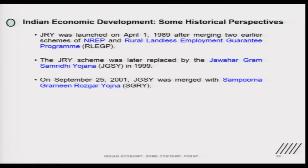JRY was later merged into the Jawahar Gram Samridhi Yojana (JGSRY). Under this scheme, emphasis was given on capital asset creation — if a village lacked capital assets such as water ponds, good roads, or a playground, the money could be used for those purposes. On September 25, 2001, JGSRY was merged into Sampoorna Grameen Rozgar Yojana. These schemes demonstrate how we progressed through the planning process.